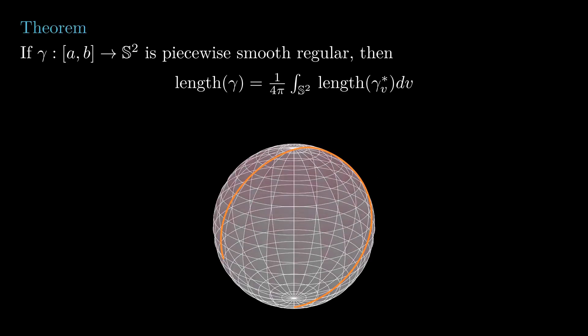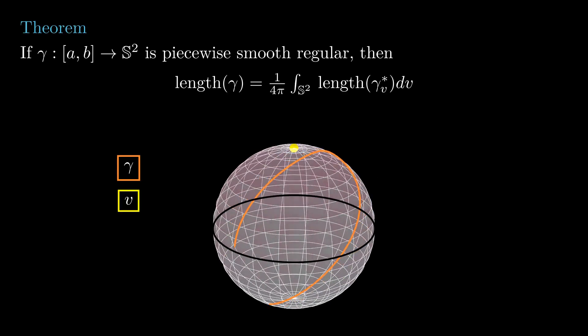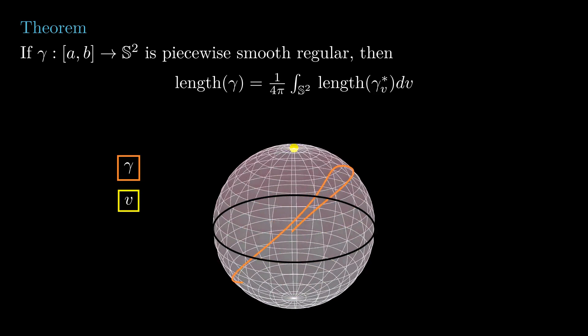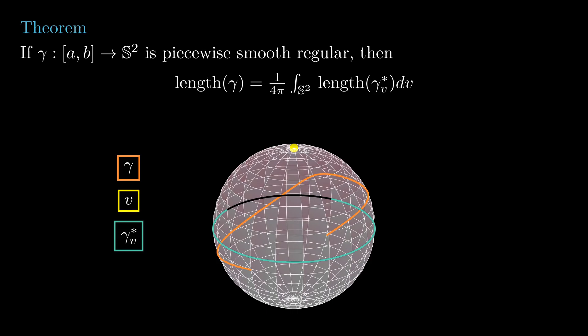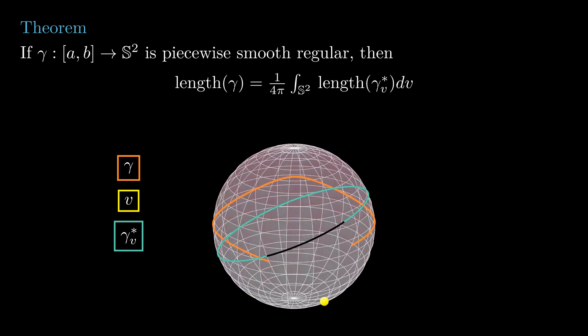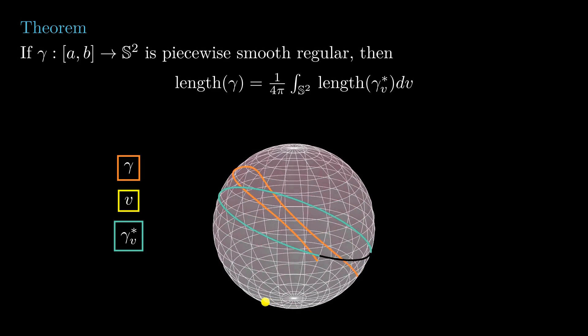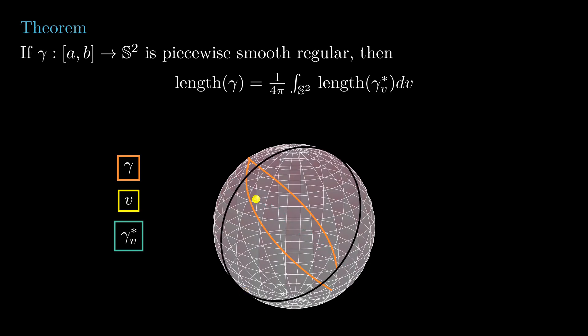This projection gives us the first Crofton formula for spherical curves. For any piecewise smooth regular curve, its length is given by the average of the length of its projections. Notice that the integrand on the right is defined at a point v if and only if the curve doesn't pass through v. To guarantee that this happens almost everywhere, we ask the curve to be piecewise smooth regular.